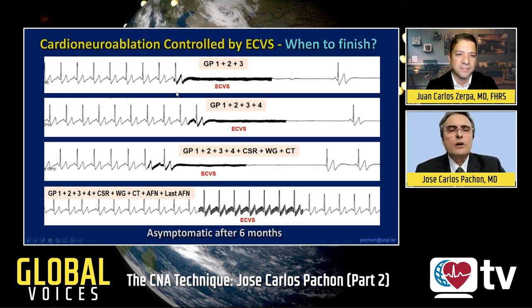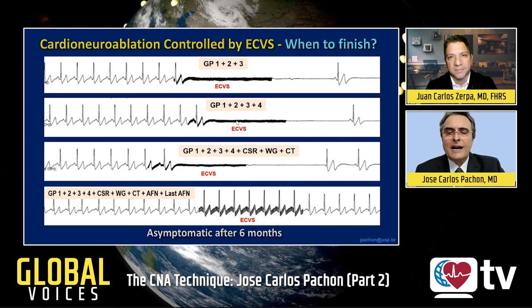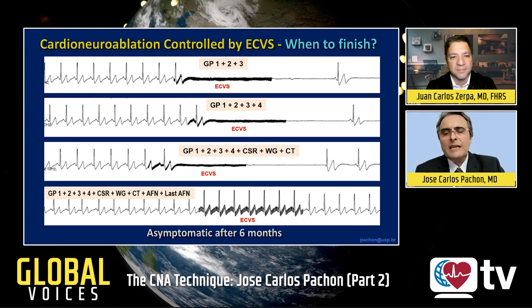Here we can see an example from our service showing that there was a very important vagal effect by ablating ganglia 1, 2, and 3. After ablating areas 1, 2, 3, and 4, there was still a very important vagal response. Ablating several areas related to the coronary sinus, the Waterston groove, and crista terminalis, there was still a very important vagal effect. The vagal effect was completely eliminated only after ablating several additional atrial fibrillation nests located by fractionation mapping. So, independent of the technique, the most important goal is to get the vagal effect elimination.